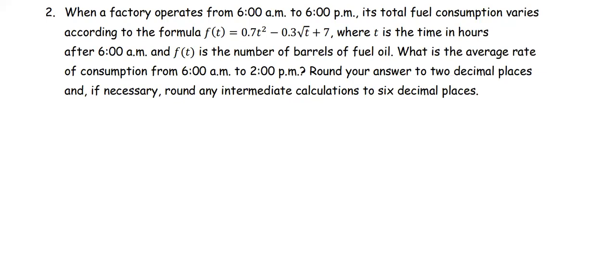In this problem, when a factory operates from 6 a.m. to 6 p.m., its total fuel consumption varies according to the formula f(t) = 0.7t² - 0.3√t + 7, where t is the time in hours after 6 a.m., and f(t) is the number of barrels of fuel. What is the average rate of consumption from 6 a.m. to 2 p.m.?